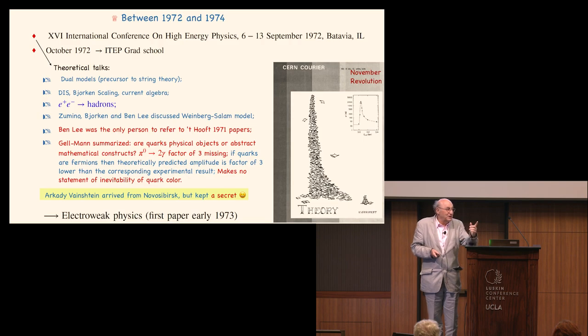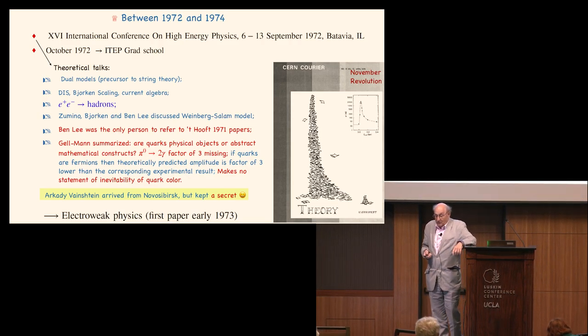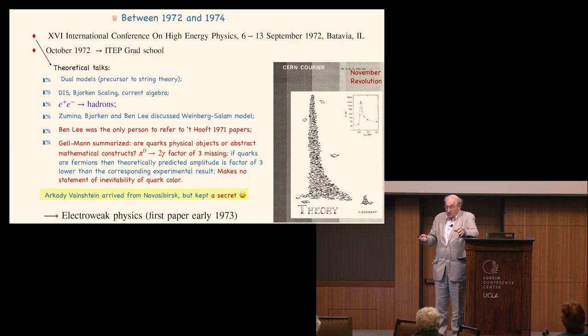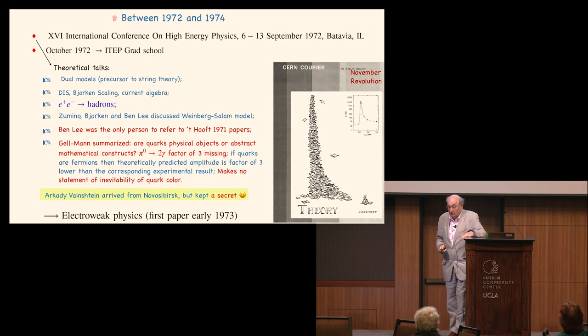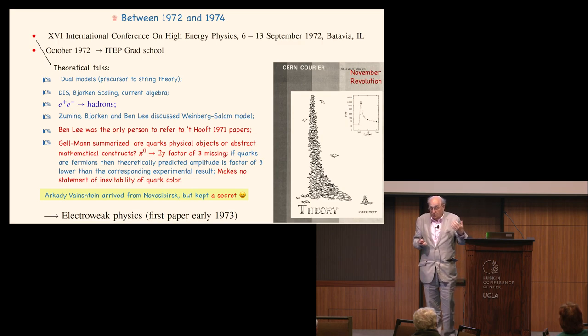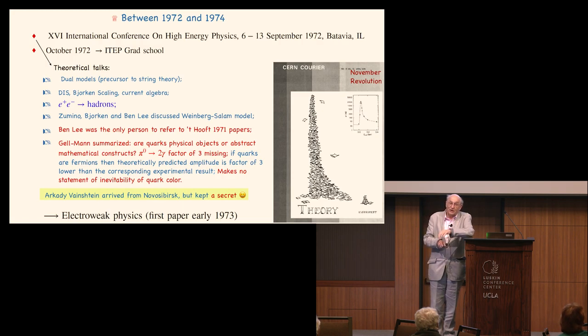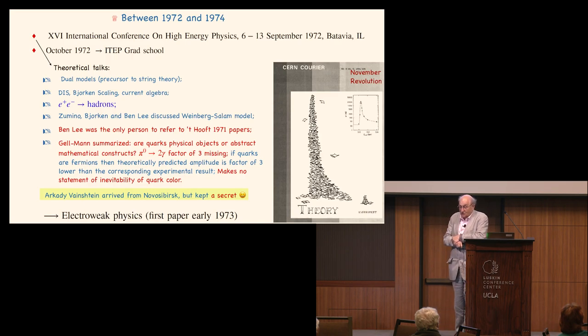I will briefly read the main results. Many talks were devoted to dual models, which, as we understand now, were the precursor to string theory. Quite significant consideration to deep inelastic scattering, Bjorken scaling, and current algebra. There was a discussion of e+ e- into hadrons. Only three theorists at the conference spoke about the Weinberg-Salam model, which a year before was proven to be renormalizable by Gerard 't Hooft. The speakers were Zumino, Bjorken, and Ben Lee.